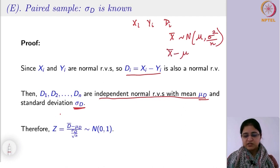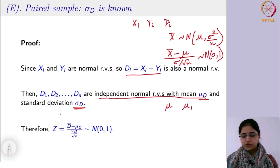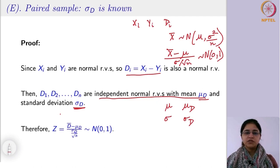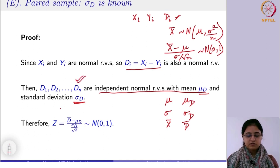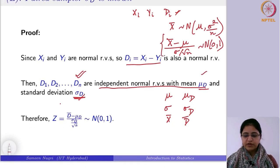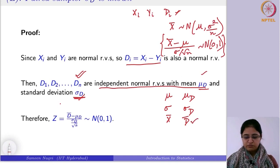And if you standardize using mu, it becomes (x-bar minus mu) divided by (sigma over root n), which follows N(0,1). Now, instead of mu you have mu_d, instead of sigma you have sigma_d, and instead of x-bar you have d-bar. So by the same logic, since d_i's form a single sample from a normal population, you can use the result that (d-bar minus mu_d) divided by (sigma_d over root n) follows N(0,1). We have basically transformed a dependent sample into a tractable single-sample problem.